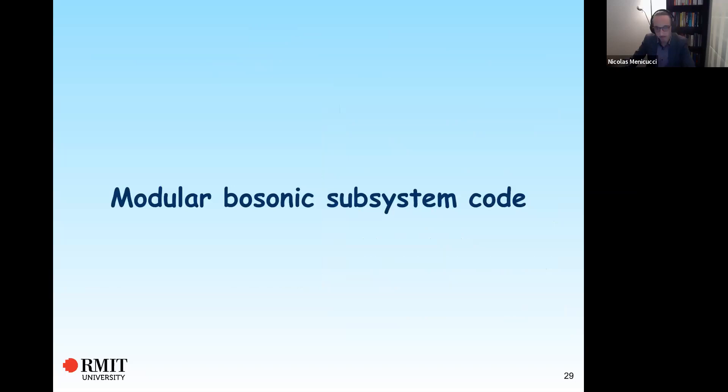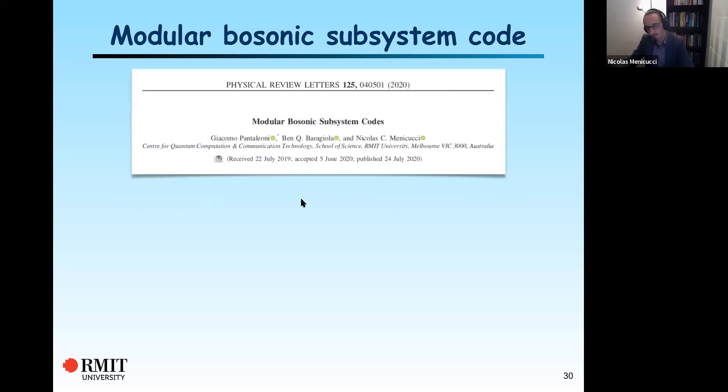Introduce modular bosonic subsystem codes. This paper was recently published just last month in PRL, by Giacomo Pantaleone, a PhD student working with me at RMIT, and Ben Baragiola, a postdoc working with me at RMIT. The three of us looked at this particular fact.